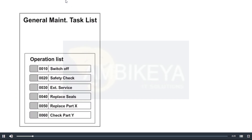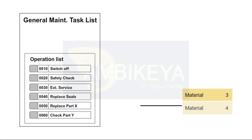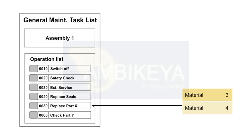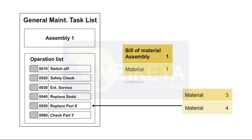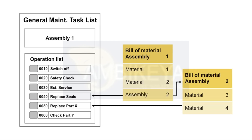To assign material components to a general maintenance task list, you must first enter an assembly in the general task list header. You can assign material components to a general task list from the BOM for the assembly (assembly 1), the BOM for the sub-assembly (assembly 2), or from the general list of materials. You can only change the assembly in the maintenance task list header if all of the components used for the operations can be deleted.